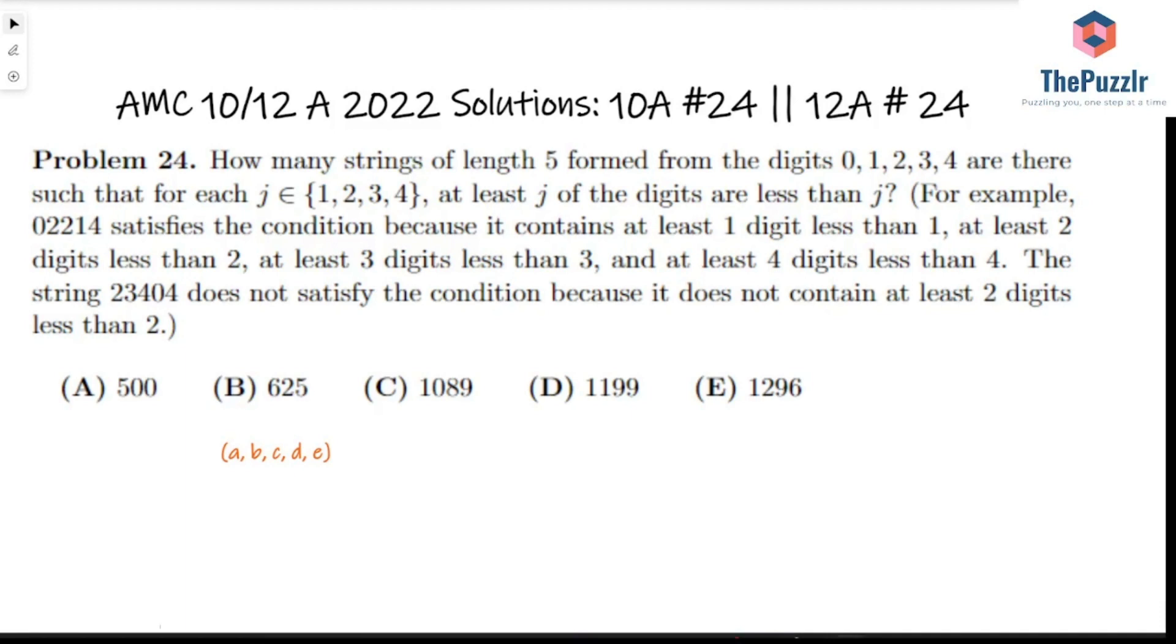How many strings of length 5 formed from the digits 0, 1, 2, 3, and 4 are there such that for each j in the set 1, 2, 3, 4, at least j of the digits are less than j?